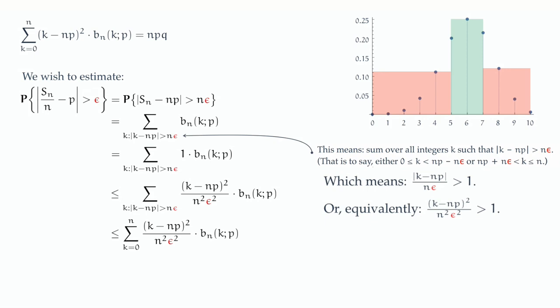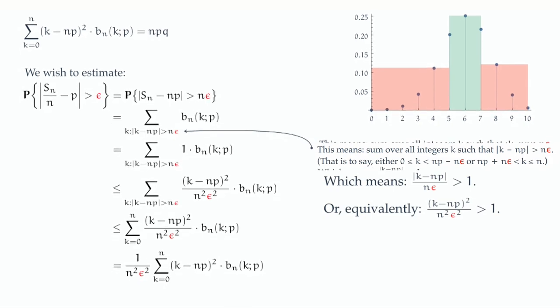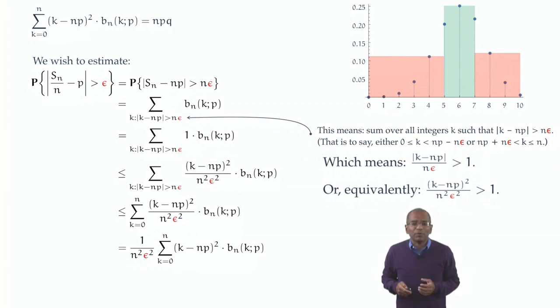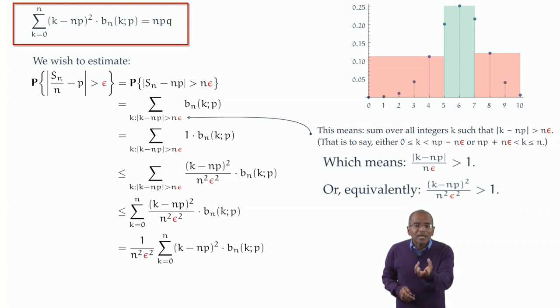Take a look at the denominator. We have n squared epsilon squared. Well, that doesn't depend upon k. So we can pull it out of the sum. So let's say we pull it out of the sum. The moment we do that, we've got 1 over n squared epsilon squared times the sum of k minus np squared times a binomial probability. Does this in any way look familiar? Does this tickle an atavistic memory? Of course it does. This is exactly the calculation we did for the variance. And if you look at the identity which we had discovered by identity in Tableau 10 part 1, we find that that entire sum is just n times p times q.